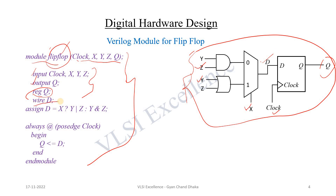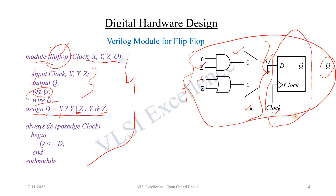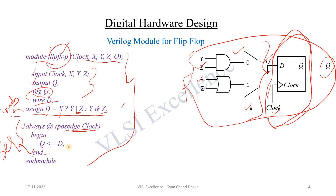First we specify the behavior of the combinational logic using continuous assignment: assign d = x ? (y | z) : (y & z). Here d is an internal wire-type variable. Whenever x is high, d is y OR z; else it is y AND z. This is the combinational part. For the flip-flop behavior, we use the always construct: always at the positive edge of the clock, q <= d. This is the sequential part modeling. So this combined module has two parts — sequential and combinational — and we have modeled both.